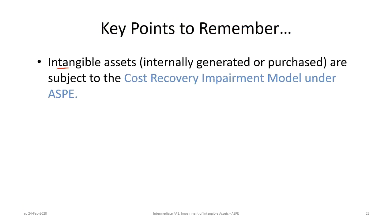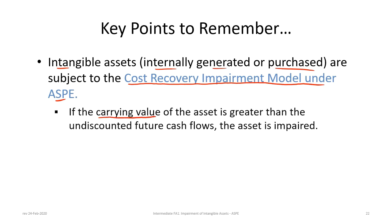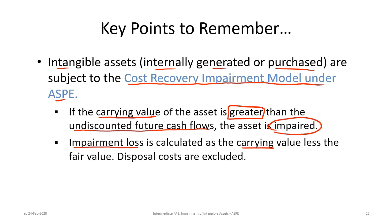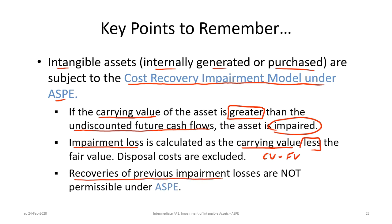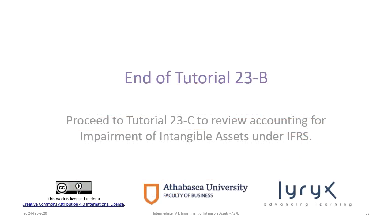Key points to remember: First, intangible assets — whether internally generated or purchased — are subject to the cost recovery impairment model under ASPE. If the carrying value is greater than the undiscounted future cash flows, the asset is impaired, and the impairment loss equals carrying value less fair value, excluding disposal costs. Finally, recoveries of previous impairment losses are not permissible under ASPE. This concludes Tutorial 23B. Please proceed to Tutorial 23C, which reviews accounting for impairment of intangible assets under IFRS.